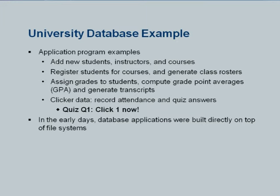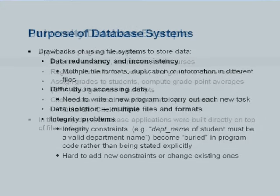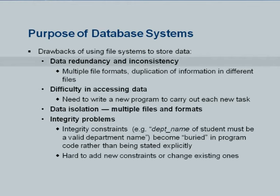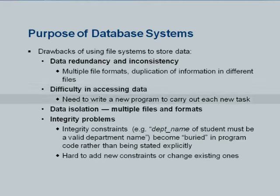A database system really gives a much higher level view of data and provides many features which are important both for ease of access to data and to ensure data is robust in the face of all kinds of failures. As an example, some of the problems which a properly designed database system can help avoid are database redundancy and inconsistency. If there are two parts of the system which give two different addresses for you, then whoever has to send you a letter is going to be confused which one to use. That is an example of redundancy and inconsistency caused by redundancy. There is also the difficulty in accessing data if you have to write a complicated program to do even simple tasks. A third problem is data isolation — multiple different file formats which get created if you store data in files. A single internal representation in a relational database system avoids these problems.